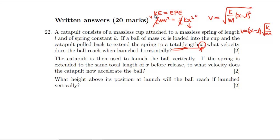The catapult is then used to launch the ball vertically. If the spring is extended to the same total length of x before release, to what velocity does the catapult now accelerate the ball? Now some of the EPE is going to gravitational potential energy because it's going upwards rather than horizontally. So we've got ½k(x-l)² equals ½mv² plus mg(x-l).